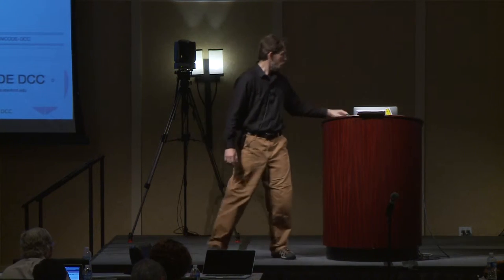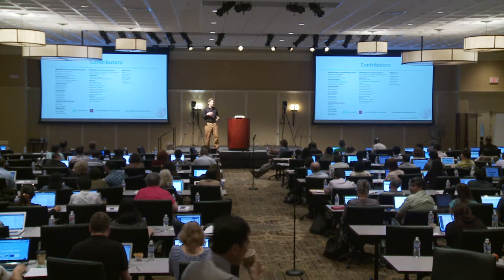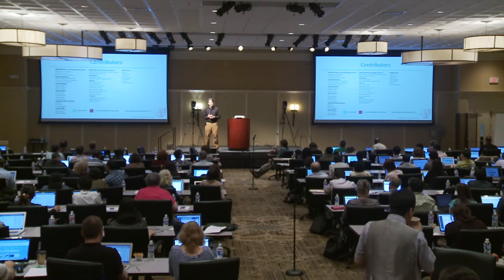You can reach us after the session through encodehelp at lists.stanford.edu. That will go to our group and we all see those messages. If you have any additional questions about the pipeline or how to run them, contact us through encodehelp or get one of our cards or emails and contact us directly, because one of the goals of our project is to make this so that you can run it. So if you need more help, please contact us.